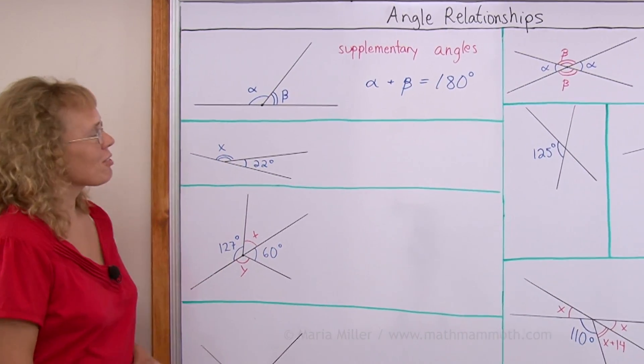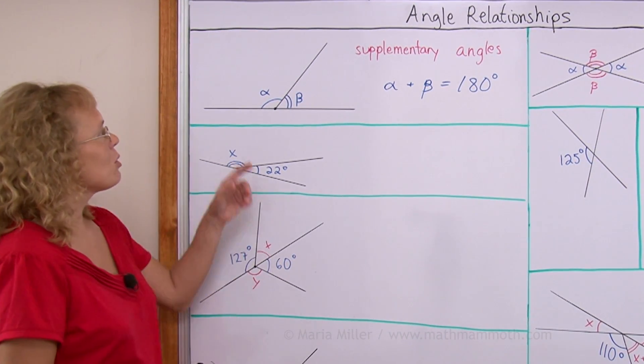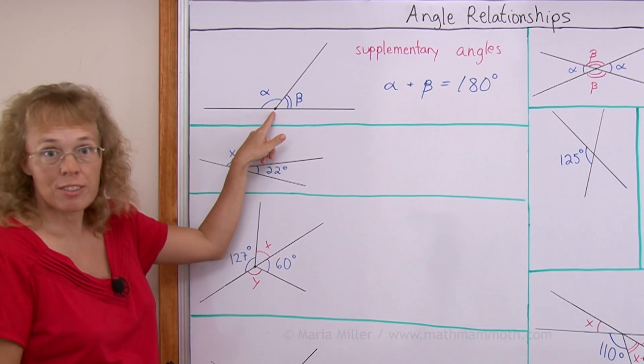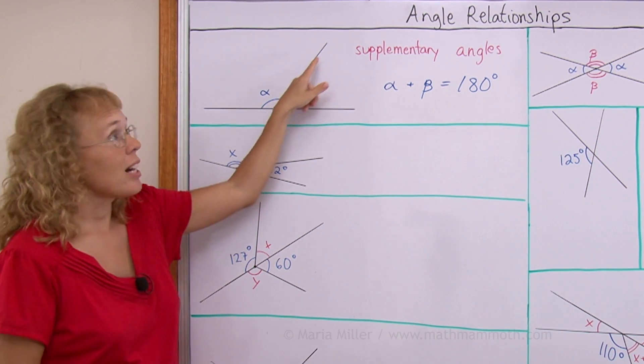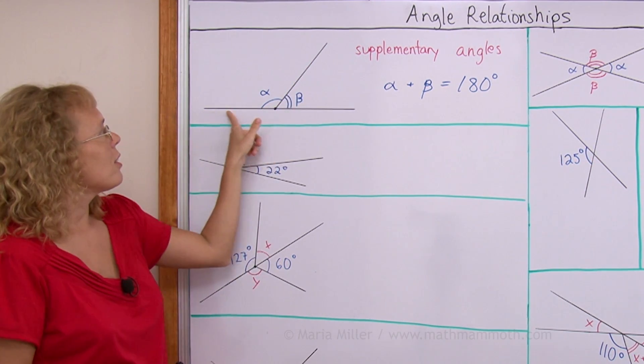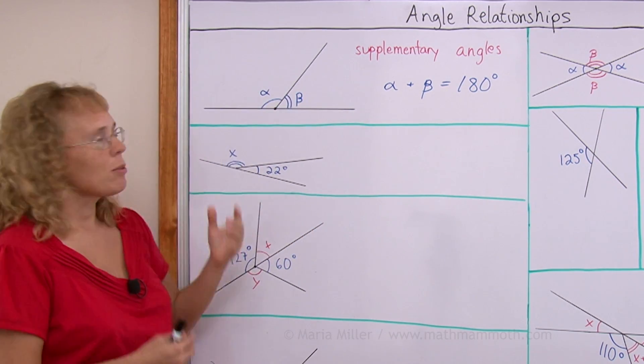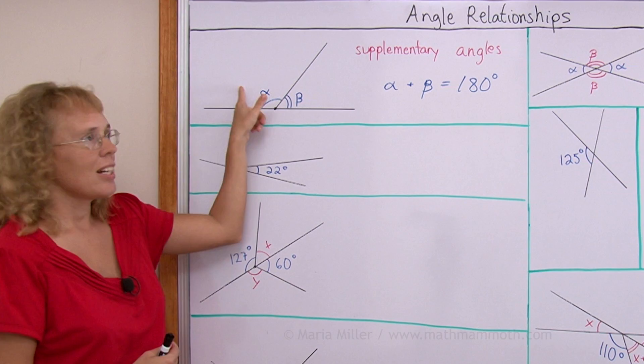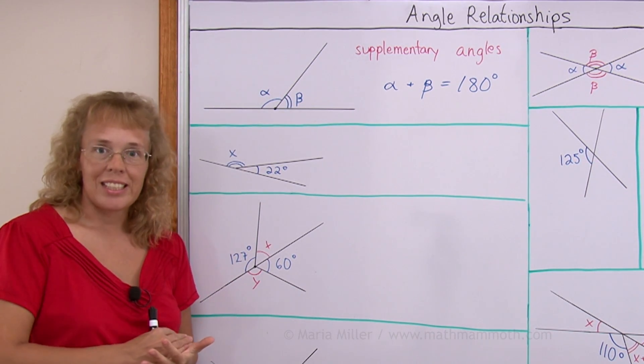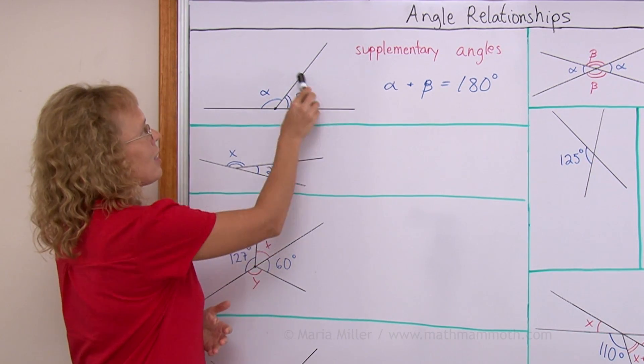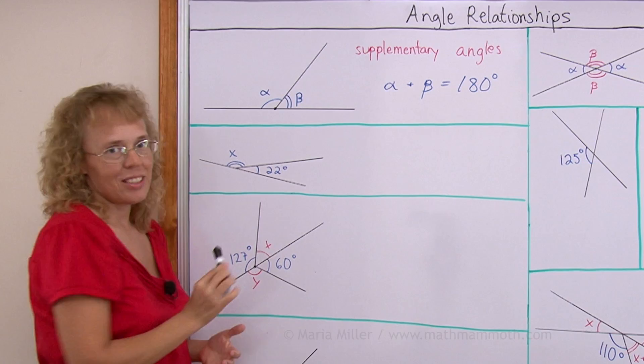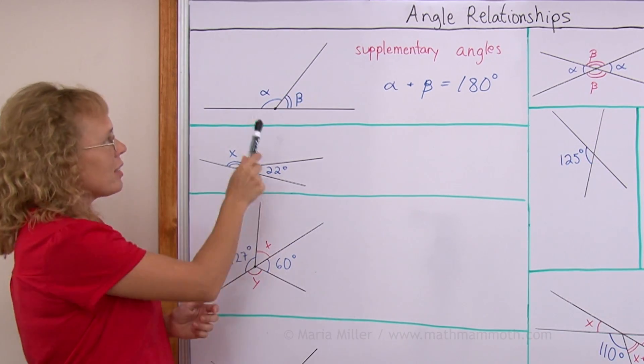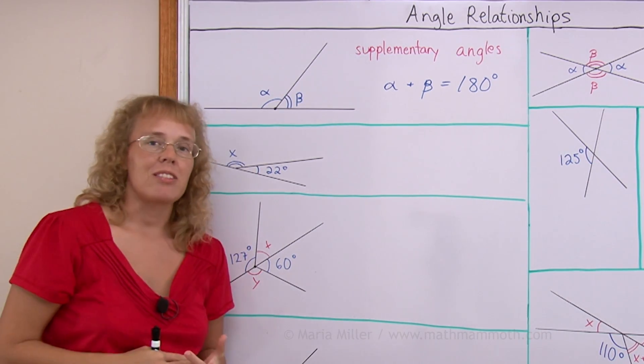The first relationship is here. It has to do with two angles that share a vertex and they share one side too. And then here is just one line. So you can probably see this relationship that these angles must add up to 180 degrees because this angle here in total is 180 degrees. Now such angles are also called supplementary angles.